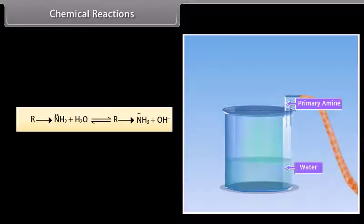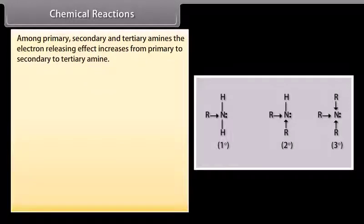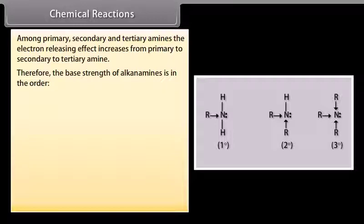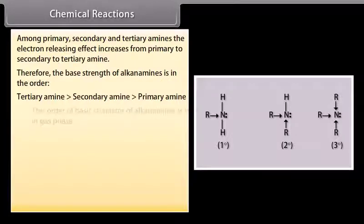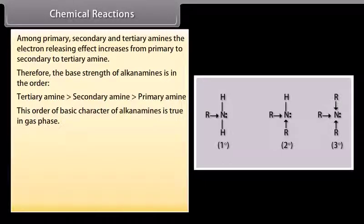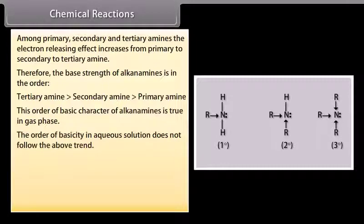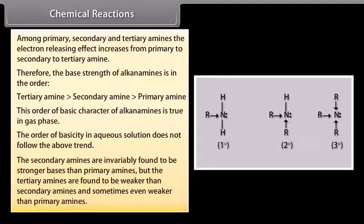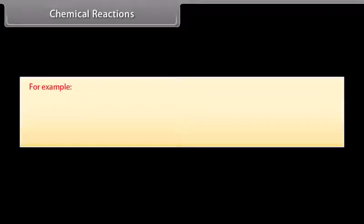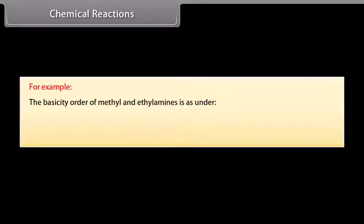Among primary, secondary, and tertiary amines, the electron-releasing effect increases from primary to secondary to tertiary amine. Therefore, in gas phase, the base strength of alkanamines follows the order: tertiary > secondary > primary. However, in aqueous solution this order does not hold. Secondary amines are invariably found to be stronger bases than primary amines, but tertiary amines are found to be weaker than secondary amines and sometimes even weaker than primary amines.